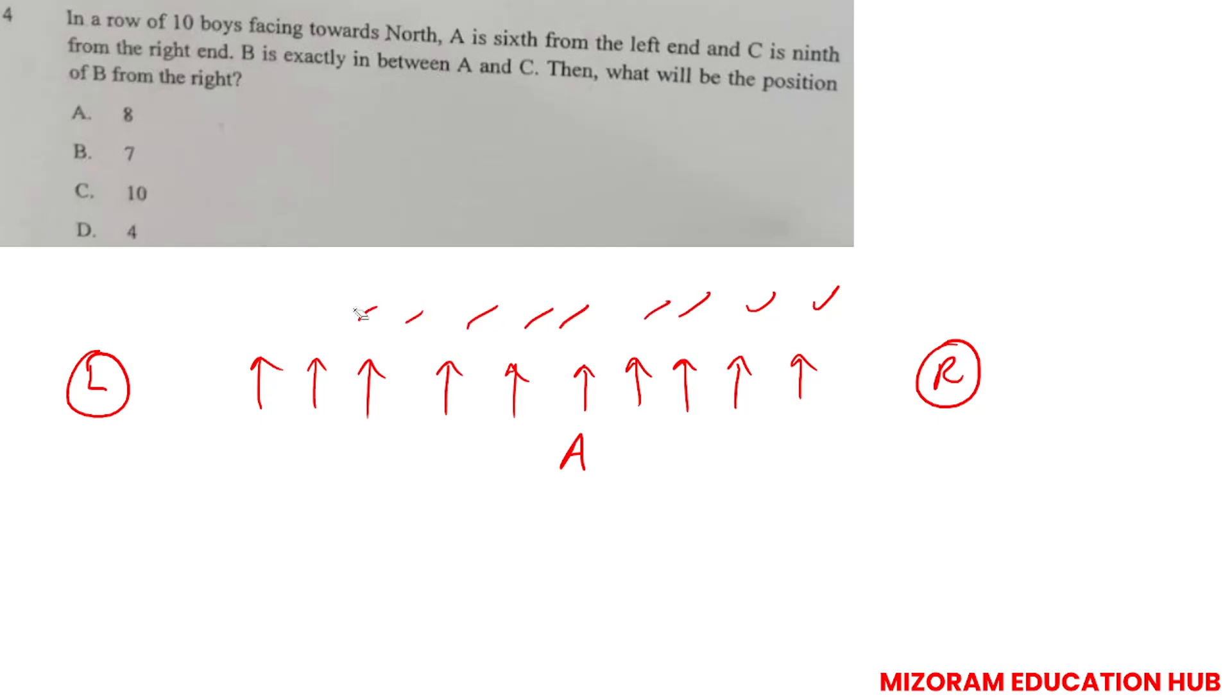Now B is exactly in between A and C and C of the right end. So this is exactly between A and C. Then what will be the position of B from the right? From the right, B's position will be 1, 2, 3, 4, 5, 6, 7. So B is correct answer, means seventh position.